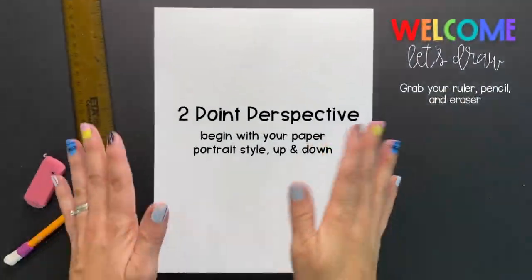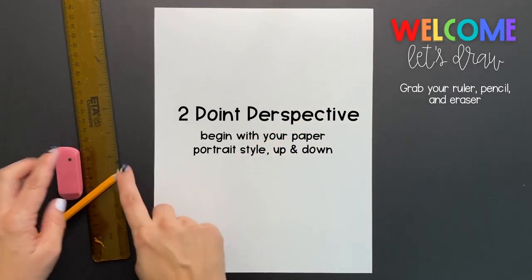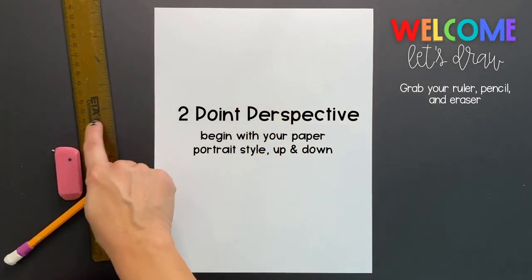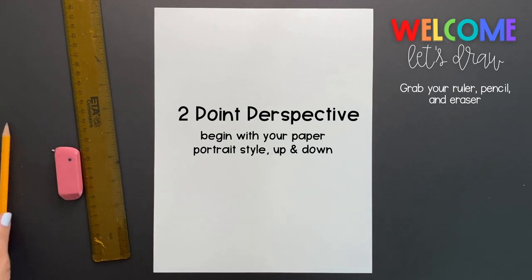Welcome artists! To begin your two-point perspective drawing, place your paper up and down or portrait style and grab your ruler and a pencil.